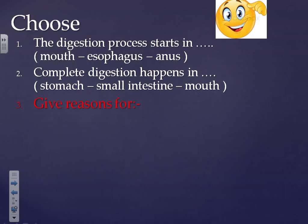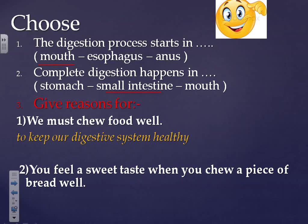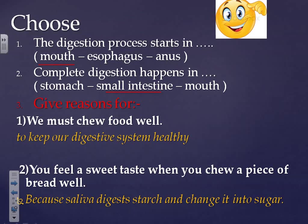Now some questions. Choose: the digestion process starts in — mouth, esophagus, or anus? Excellent, in the mouth. Complete: digestion happens in — stomach, small intestine, or mouth? Yes, the small intestine. Give reasons: why must we chew food well? To keep our digestive system healthy. Why do you feel a sweet taste when you chew bread? Because saliva digests starch and changes it into sugar. Thank you very much, study hard, goodbye.